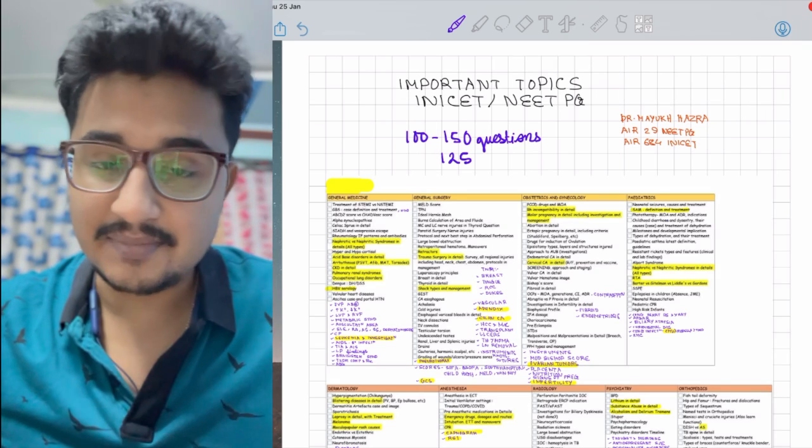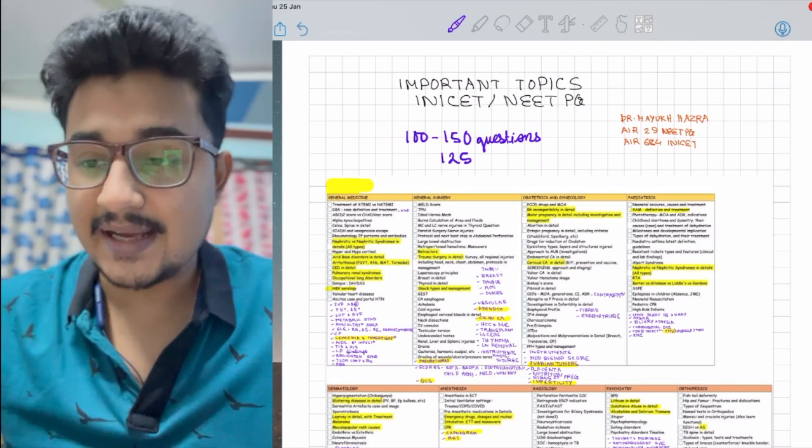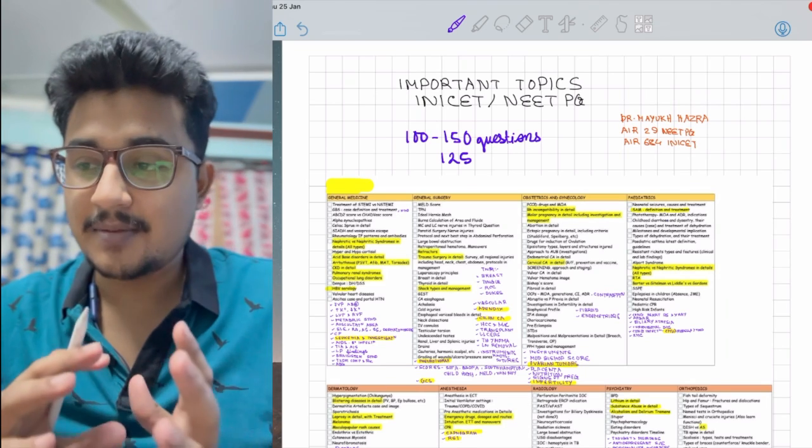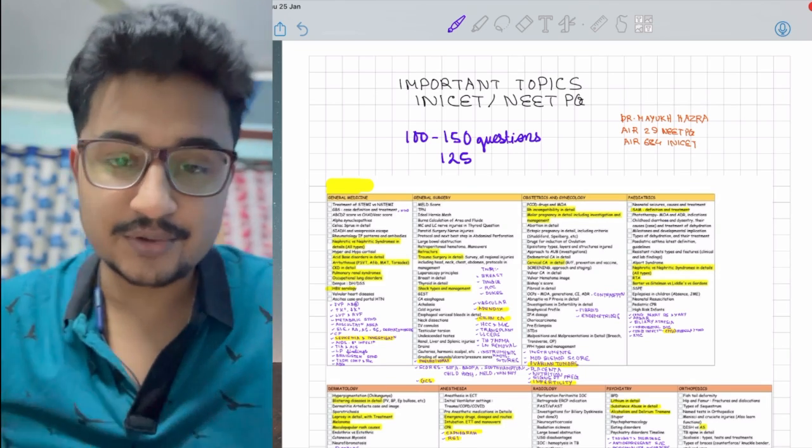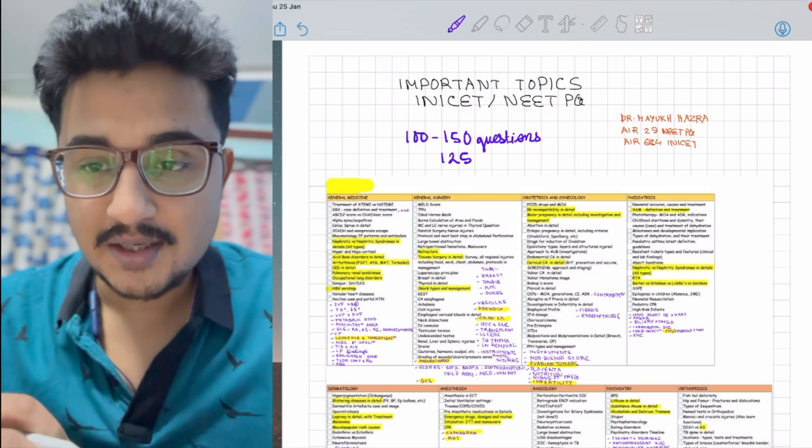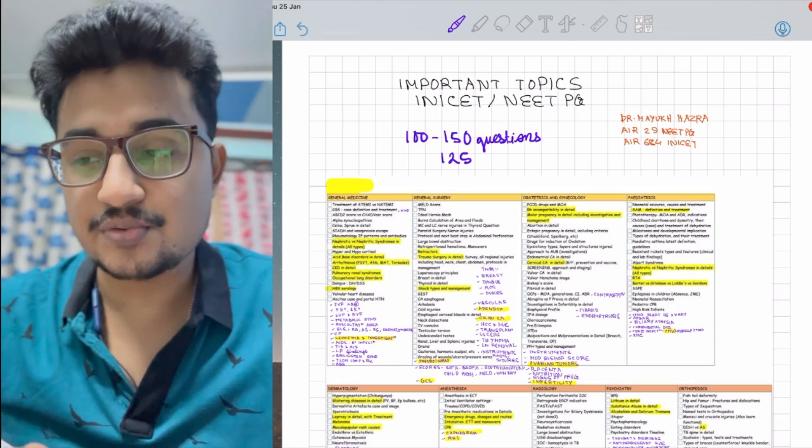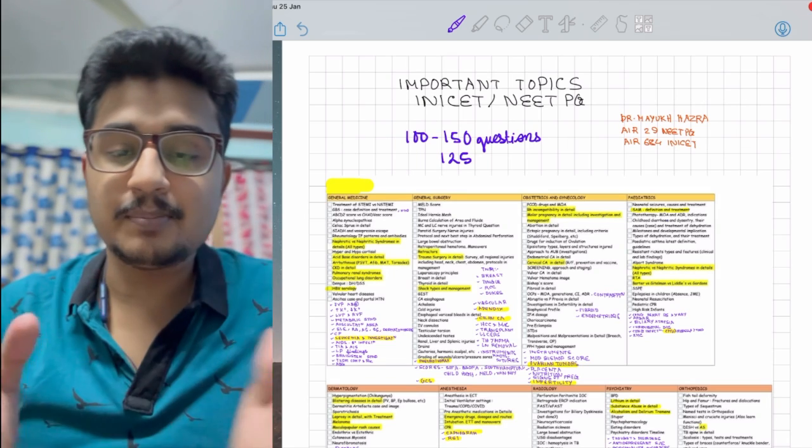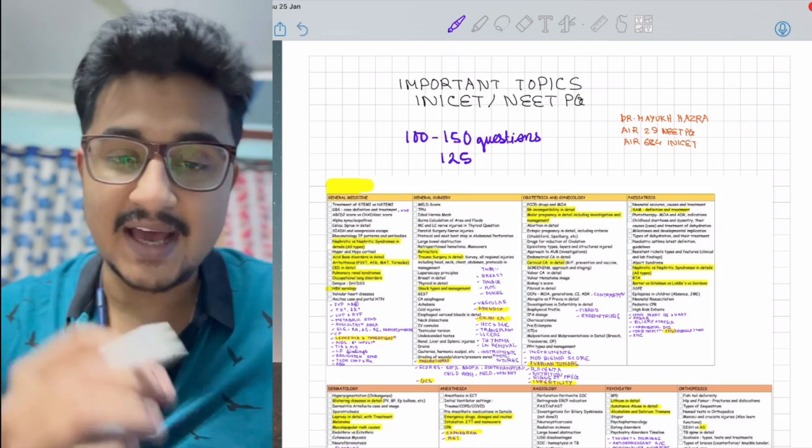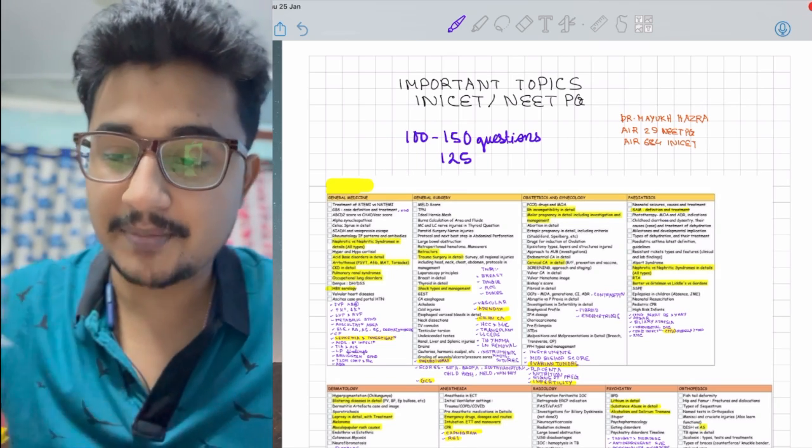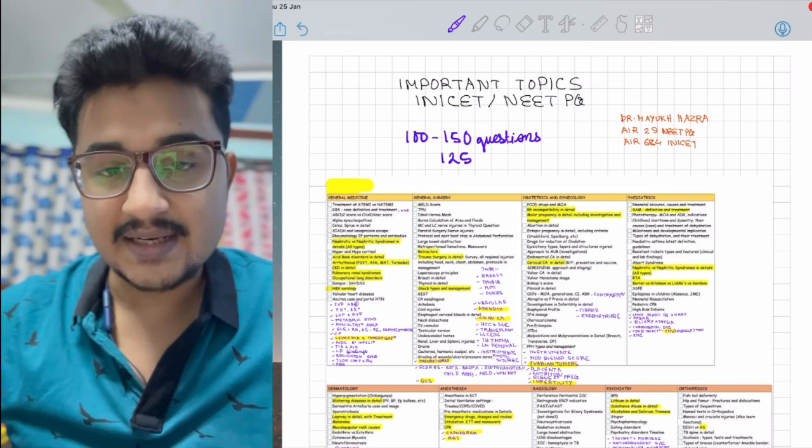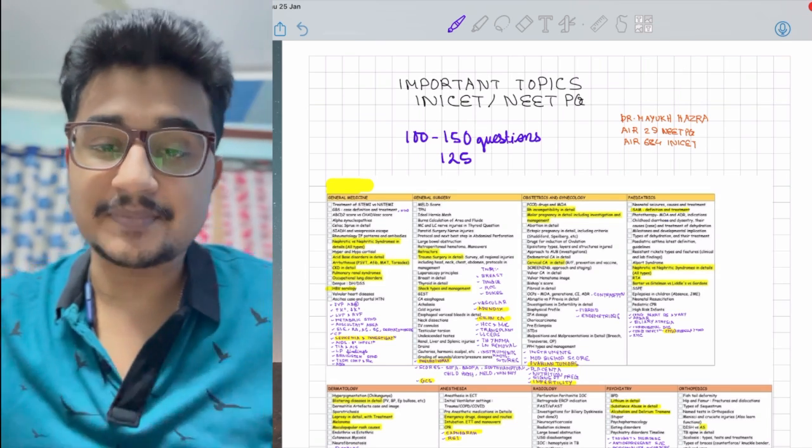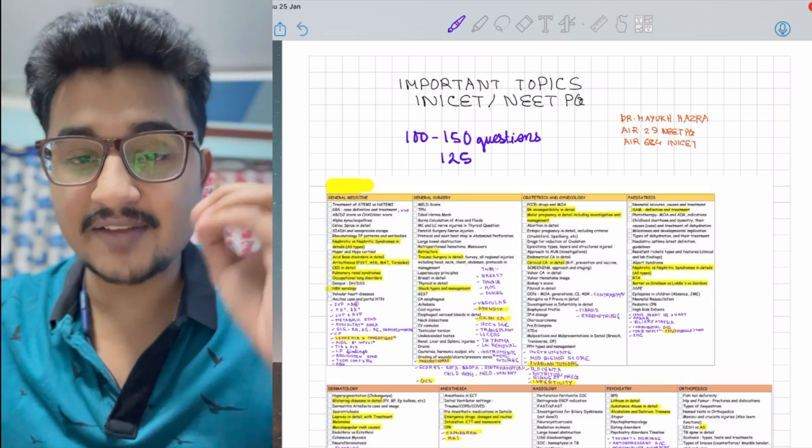I'd say approximately 125 questions you can get if you study each and every topic in depth that is mentioned in the video. This type of video doesn't exist anywhere yet. People make strategy videos, even toppers with lakhs of followers and subscribers.